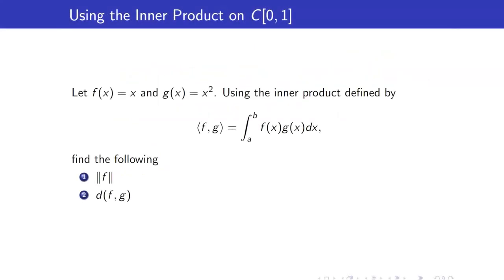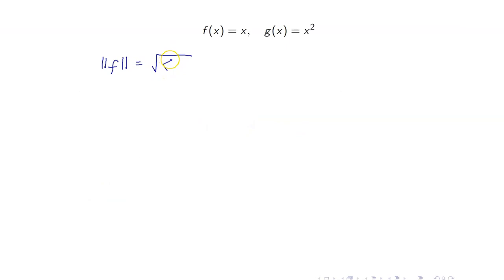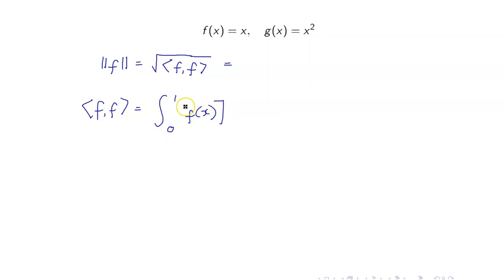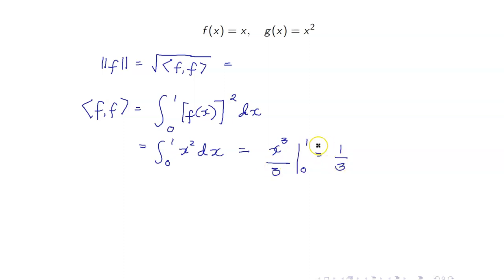Let us recall the inner product defined on the set of continuous functions. This time our interval is the interval [0, 1]. We want to find the length of F and the distance between F and G. The length of F is the square root of the inner product of F with itself. The inner product of F with itself is the integral of f(x) squared, which equals the integral of x squared from 0 to 1, equal to 1/3. Therefore, the length is equal to the square root of 1/3, or square root of 3 over 3.